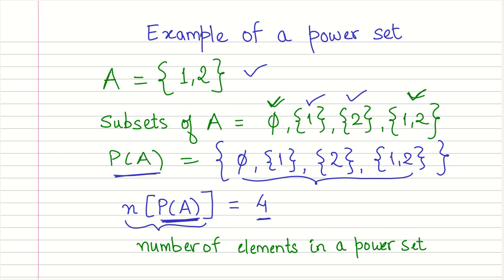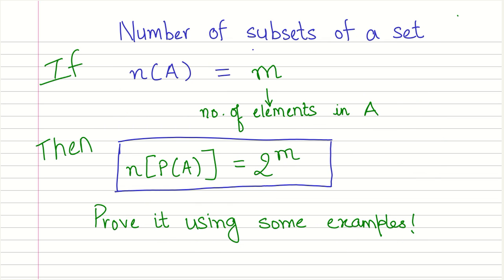Now that brings us to another question. How do we find out the number of subsets of a particular set? So if we have a set A, and this is how we represent the number of elements in a set A. So if the number of elements in set A is equal to m, where m is some number depending on how many elements are there, then the number of elements in its power set, that is P of A, will be 2 to the power m.